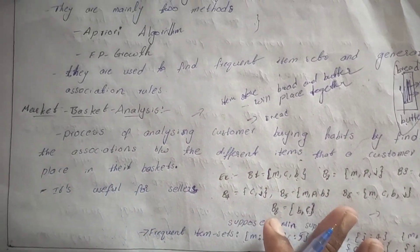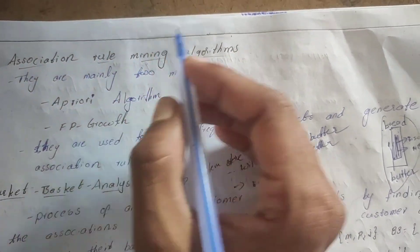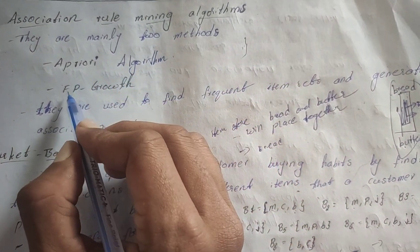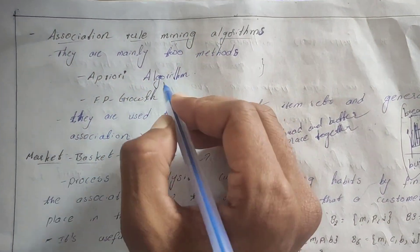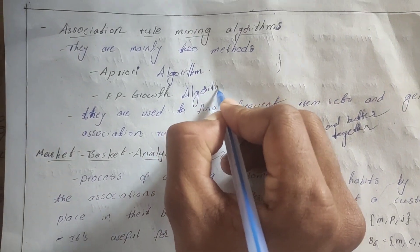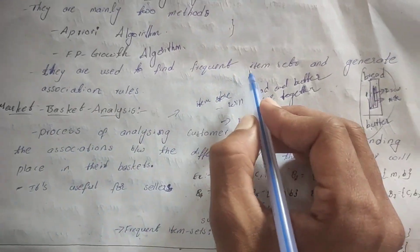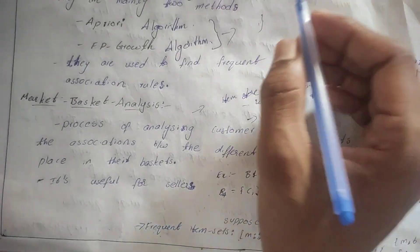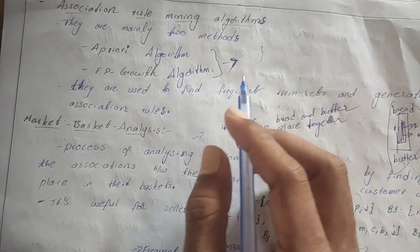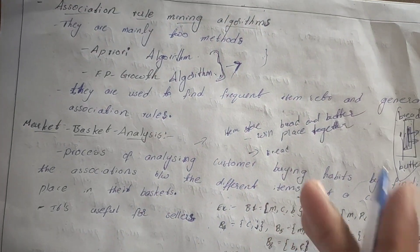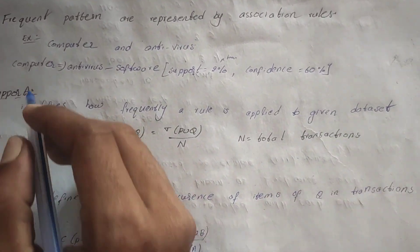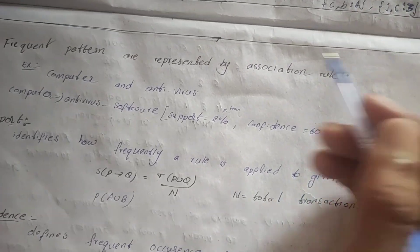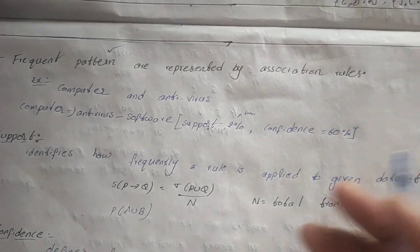There are mainly two association rule mining algorithms: one is the Apriori algorithm and the other is FP-Growth — Frequent Pattern Growth. These algorithms are used to find frequent item sets and generate association rules. Before going into these algorithms, you need to know about support and confidence. Frequent patterns are represented by association rules.